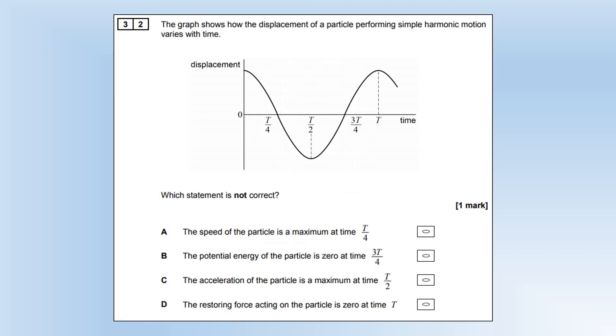The graph shows how the displacement of a particle performing SHM varies with time. Which statement is not correct? The speed of the particle is maximum at t over 4, that's true, because it's at zero displacement. Potential energy is zero at 3t over 4, that's true, at no displacement you have no potential energy. Acceleration of the particle is maximum at t over 2. The acceleration is maximum at maximum displacement, that's true. The restoring force acting on the particle is zero at time t. No, that's not true. It has maximum restoring force at maximum displacement, which finishes off this paper.